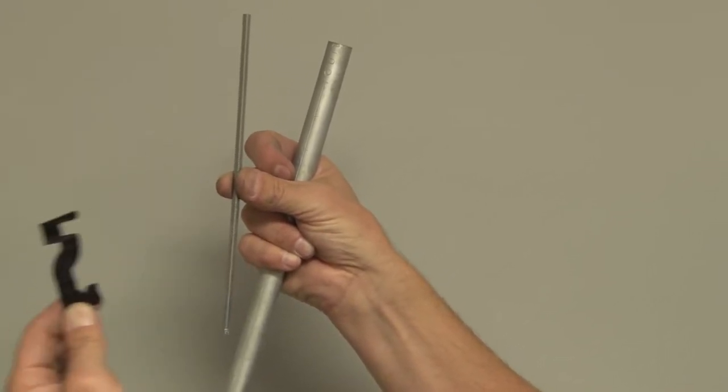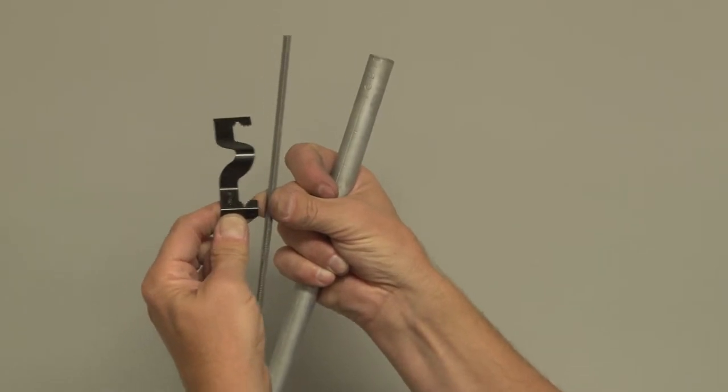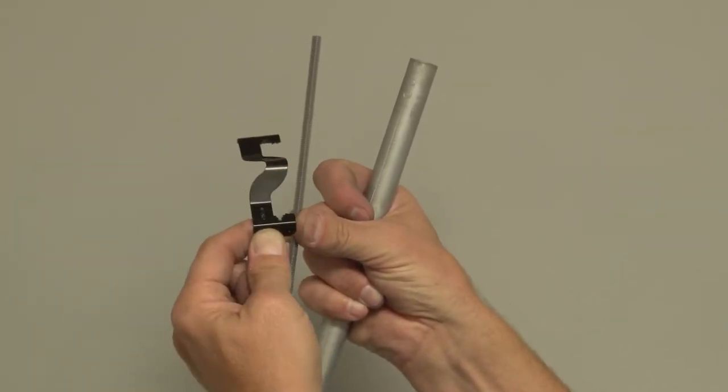Anytime you have a conduit that runs parallel to this, you need to support it mid-span. The quickest and easiest way is to take the Garvin Industries conduit wing clip.